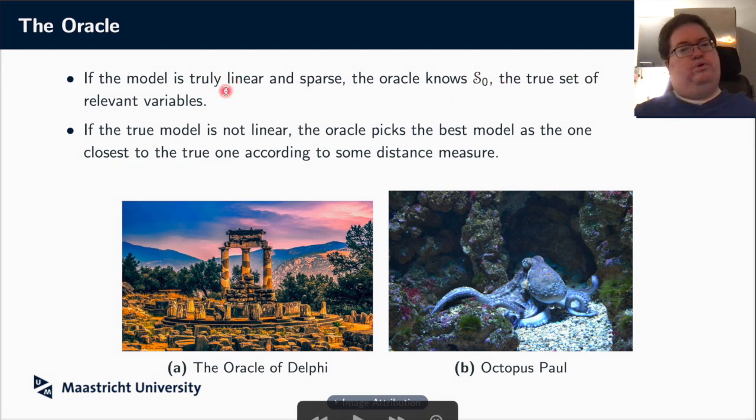Now this means that we would have to assume that the model is truly linear, which we might not always want. But we can actually extend the idea to where the true model is not linear or not fully sparse. What the oracle can do is pick the best model from the set of linear models that is, in one way or another, closest to the true one. So we can define some distance between models, and the oracle knows how to pick the best one according to that distance.